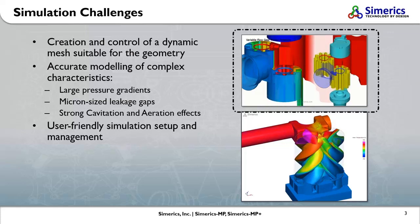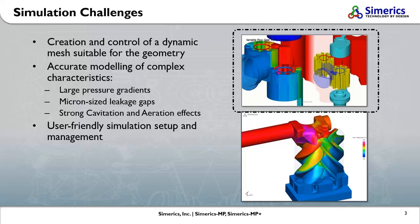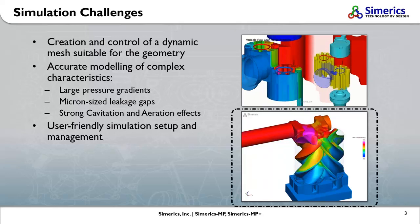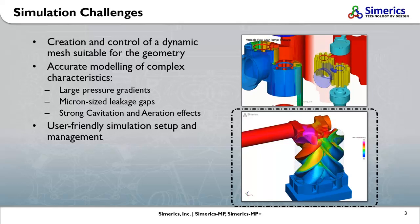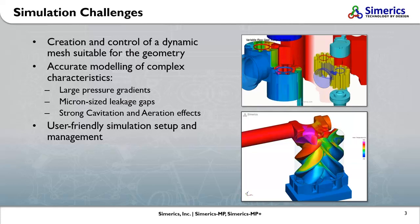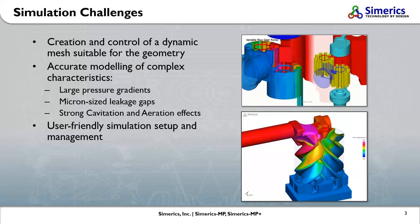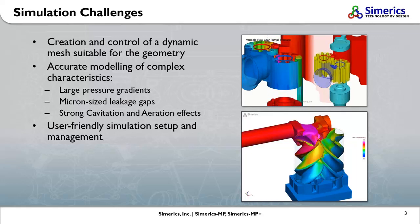The top image shows a variable displacement external gear pump, and the bottom image shows a twin screw compressor. The complex and distorted cavities present in both models make creating a suitable mesh incredibly difficult. There are also typically micron level gaps that can make meshing more difficult.